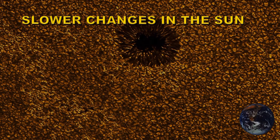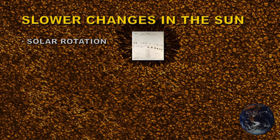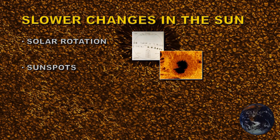There are more gradual changes in the Sun that are nonetheless just as important. For example, the Sun rotates — once every 28 days at the equator, a bit slower at the poles. That's a very important observation, as we'll see later. This was first discovered by Galileo, who tracked sunspots crossing the Sun. Sunspots themselves are a feature that can appear relatively quickly, in a few hours, but can remain around for several rotations of the Sun.